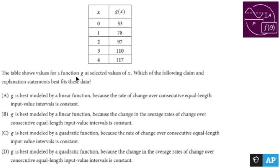The table shows values for a function g at selected values of x. Which of the following claim and explanation statements best fits the data?